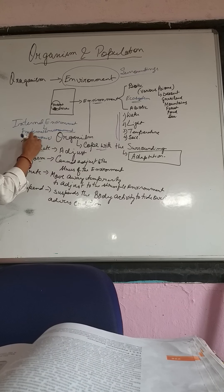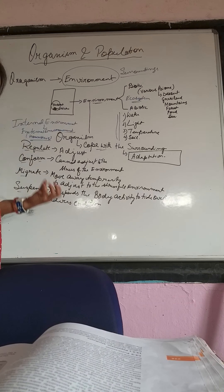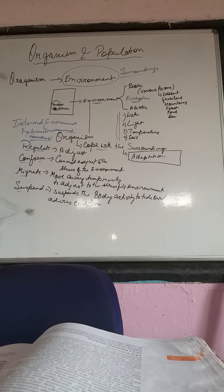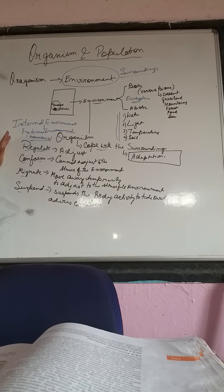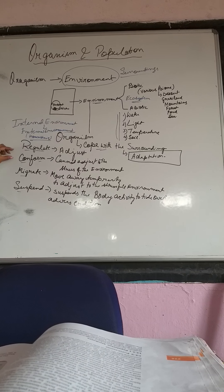Homeostasis is the innate quality of an organism to adjust to the environment. If we consider the internal environment, there are four factors: regulate, conform, migrate, and suspend.